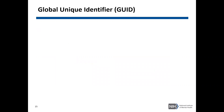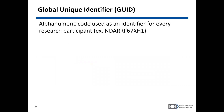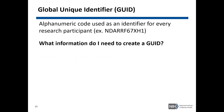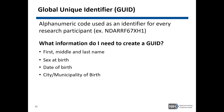GUIDs are alphanumeric codes used as an identifier for every research participant that you submit data for. In order to create a GUID, you must have the first, middle, and last name of a participant, the sex at birth, date of birth, and city of birth. You should use the information from the participant's birth certificate to ensure that all the information is correct when creating your GUID.